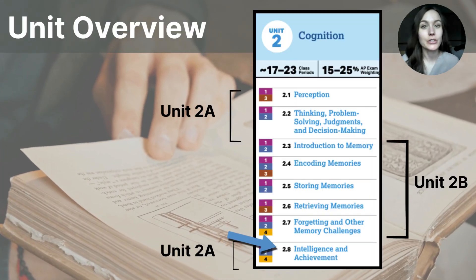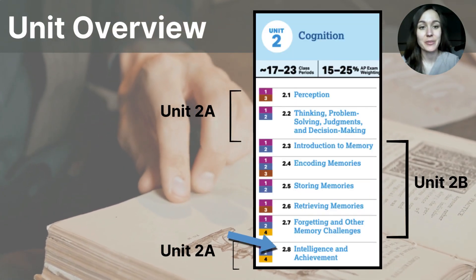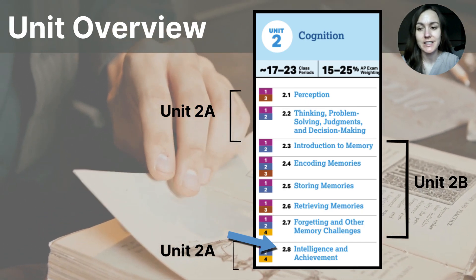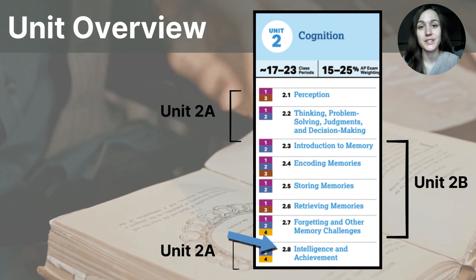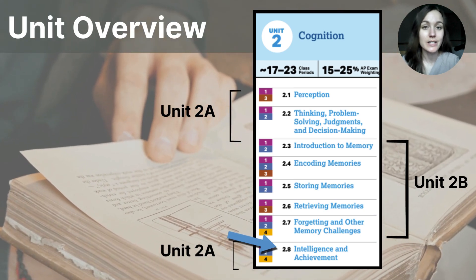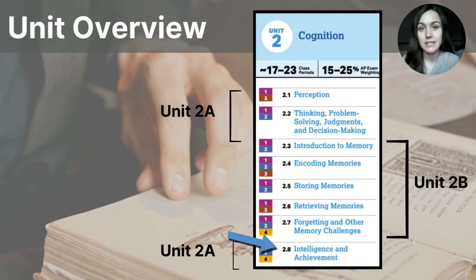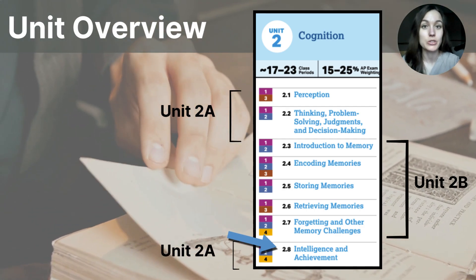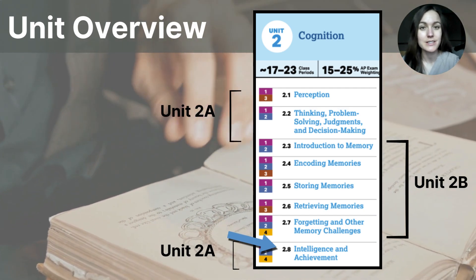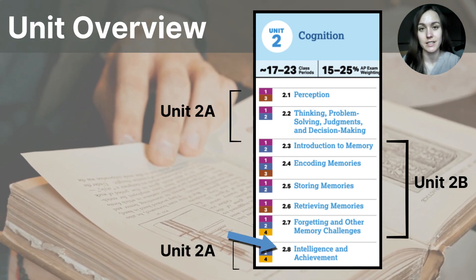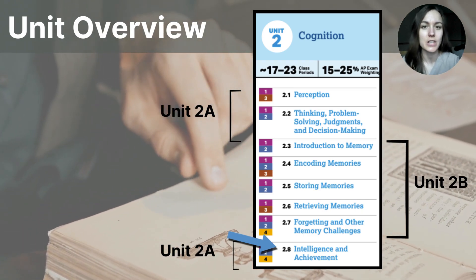Let's take a look at where we are in the unit. Our arrow is down at the bottom of the unit content list. So far in this series, you should have watched parts one through three, which covered the topics in the CED related to perception, thinking, and problem solving. Now we are beginning the topic of intelligence, and this is going to take up two videos. Today's video will cover theories of intelligence and the history of intelligence testing, whereas the video to come will focus specifically on psychometrics.